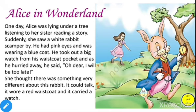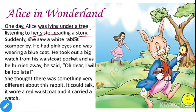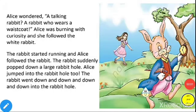Let's see the story. One day Alice was lying under a tree, listening to a story being read by her sister. Suddenly she saw a white rabbit with pink eyes, wearing a blue coat. He took out a big watch from his waistcoat pocket as he hurried away. That white rabbit said, 'Oh dear, I will be too late.' She thought there was something very different about this rabbit because it could talk. It wore a red waistcoat and carried a watch.